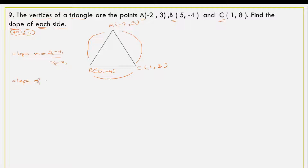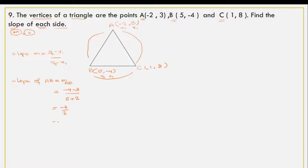So for MAB, let point A be (x1, y1) and point B be (x2, y2). That gives us: y2 minus y1 is minus 4 minus 3, and x2 minus x1 is minus 4 minus minus 2, which is minus 4 plus 2. So we get minus 7 divided by minus 2, which simplifies to minus 1. So MAB equals minus 1.